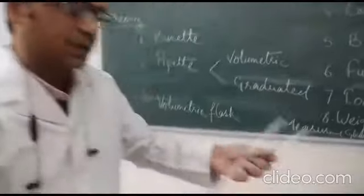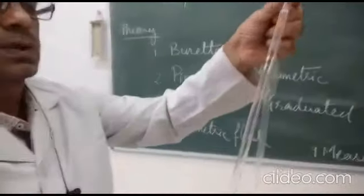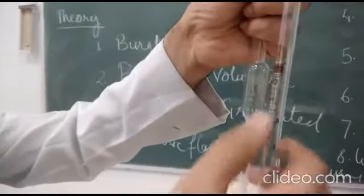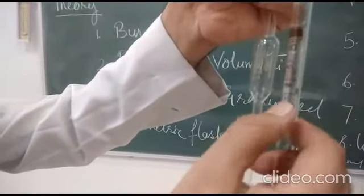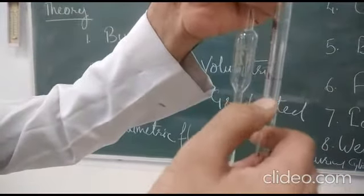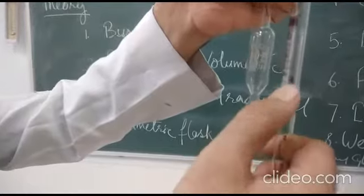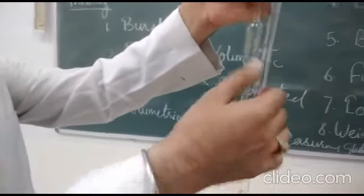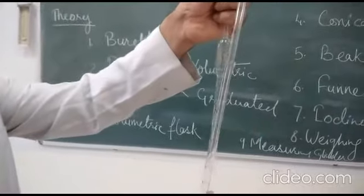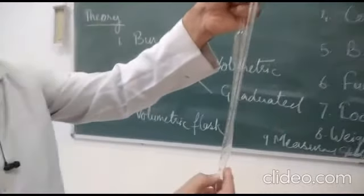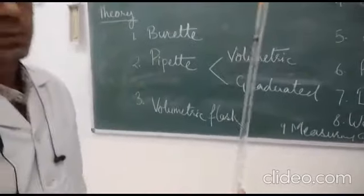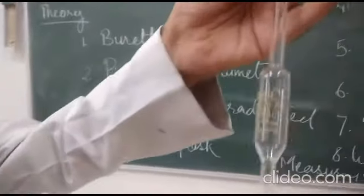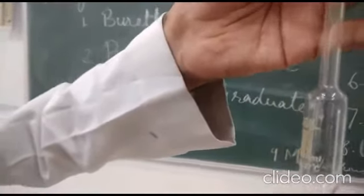Another type of pipette is the graduated pipette. You can see it has multiple marks. This one is of 10 ml. From 0 to 1 it is divided into 10 portions, and from 1 to 2 it is also divided into 10 portions — likewise up to 10 ml. This is termed a graduated pipette, while the other with a single mark is the volumetric pipette of 20 ml.